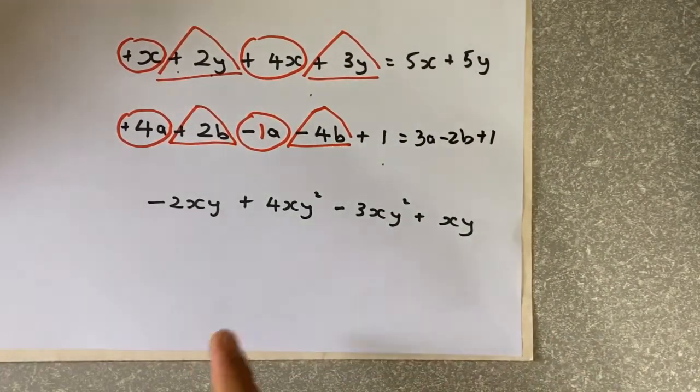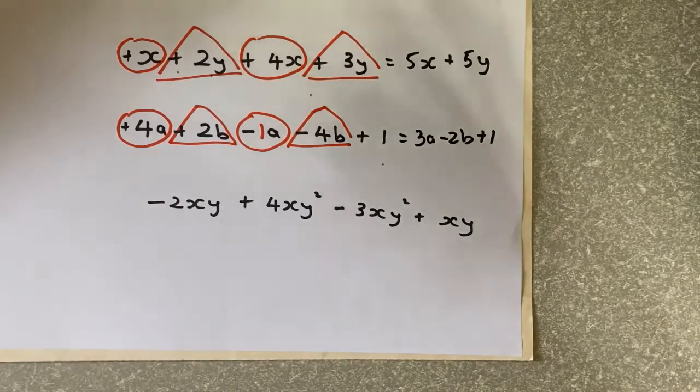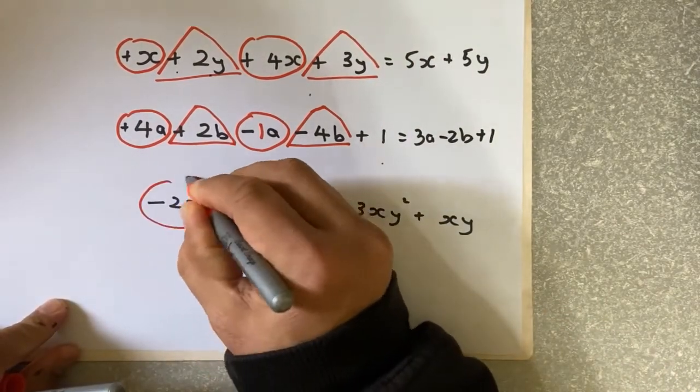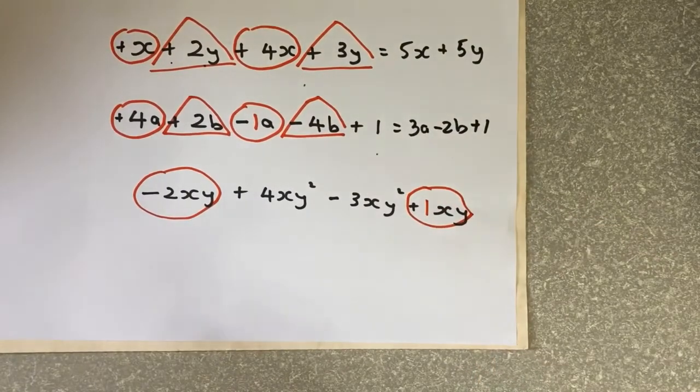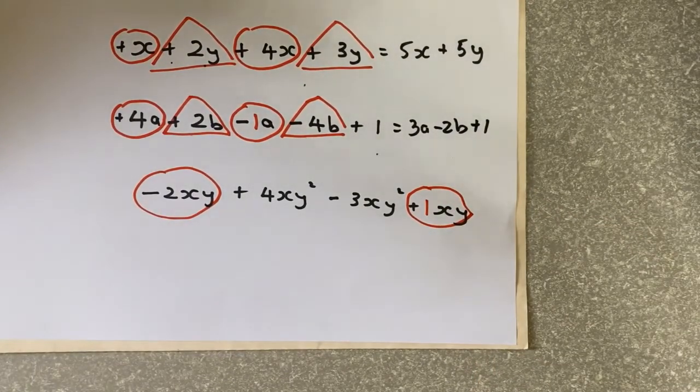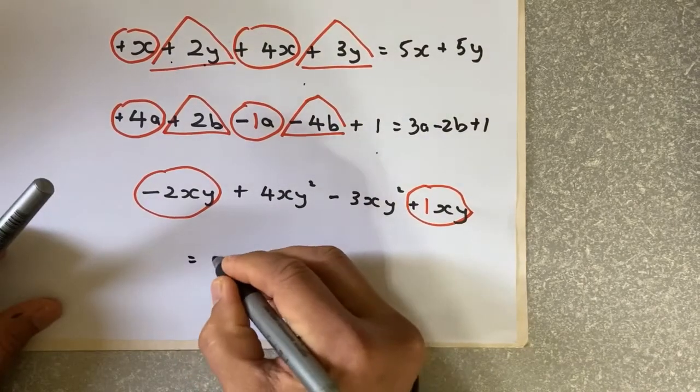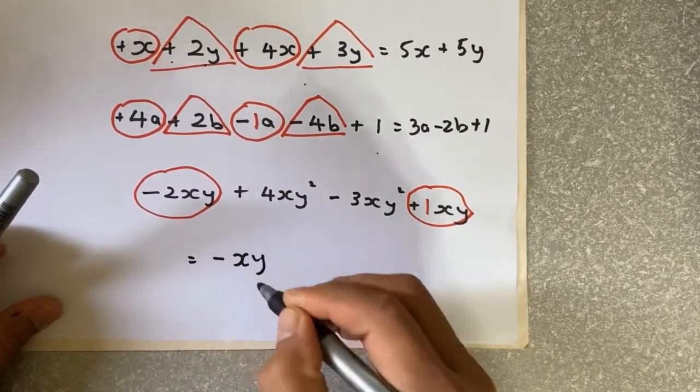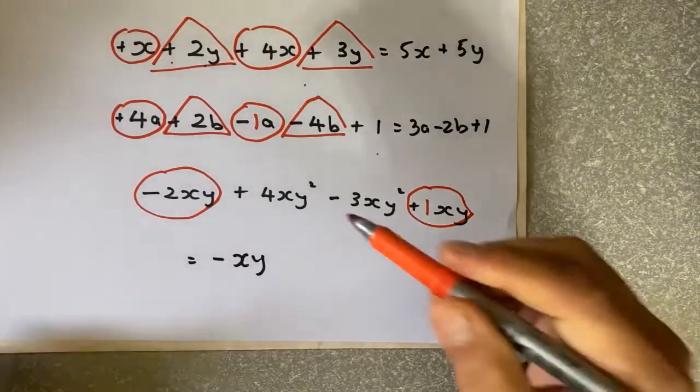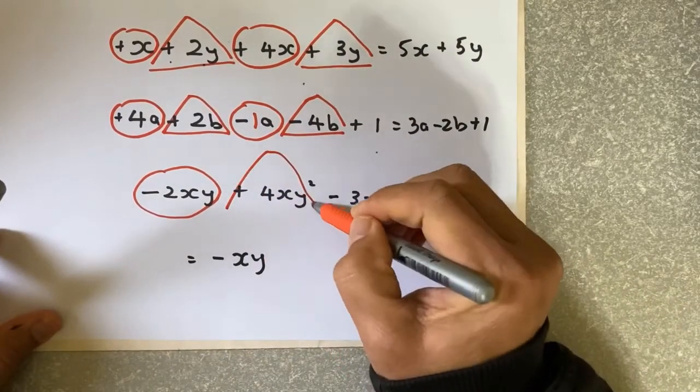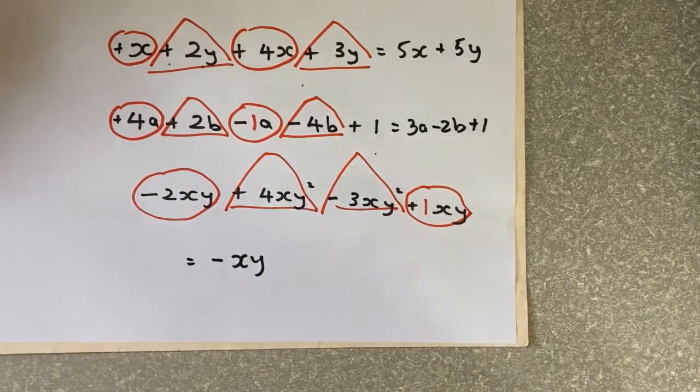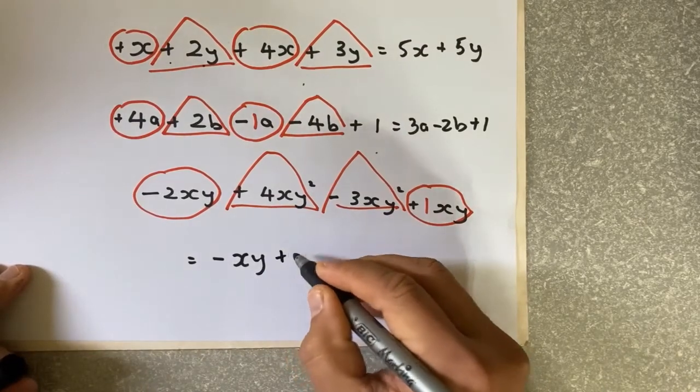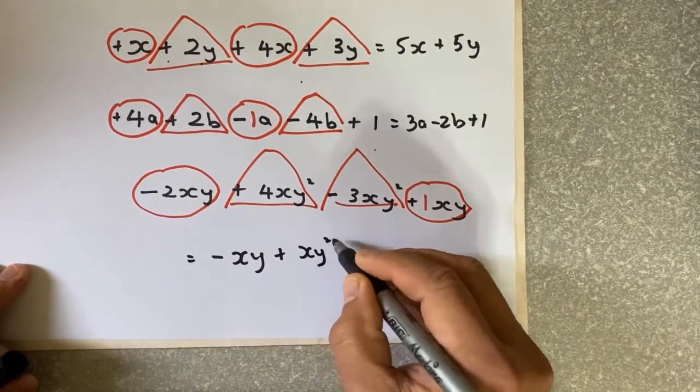Last but not least, a more complicated version. The same thing applies. Look for the same terms. The XY family and plus XY. Again, if there's no number, it is 1. So minus 2XY plus 1XY gives you minus 1XY or minus XY. The last family is the XY squared family. If I have 4XY squared minus 3XY squared, the answer is plus XY squared.